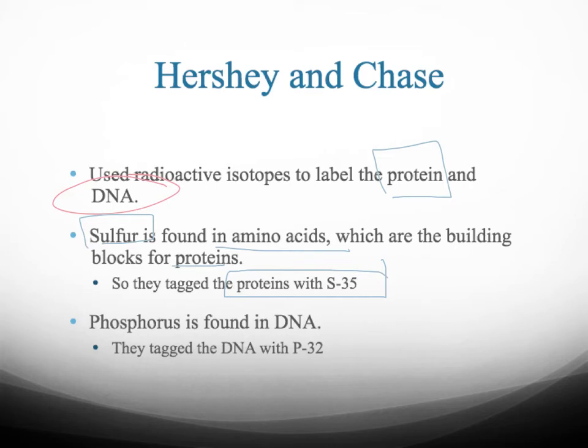For DNA, which contains phosphorus in the phosphate group, they used a different radioactive isotope to label it: P32. P is the element phosphorus, and 32 is the isotope's mass.